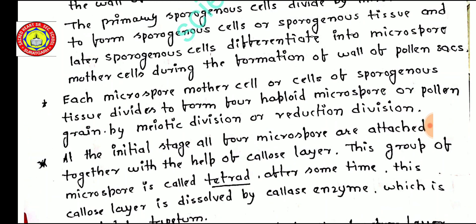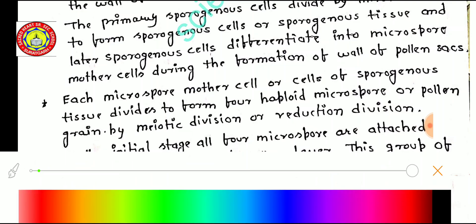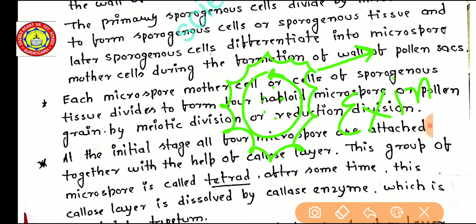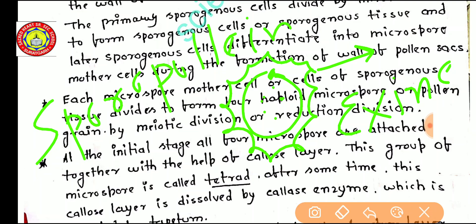When the pollen grain is developed, it has the following structure: an intine is present as the inner layer, on which the exine is present as the outer layer; one germ pore is present; one nucleus is present; and cytoplasm is present. The exine is made up of sporopollenin, which originates from the tapetum layer.